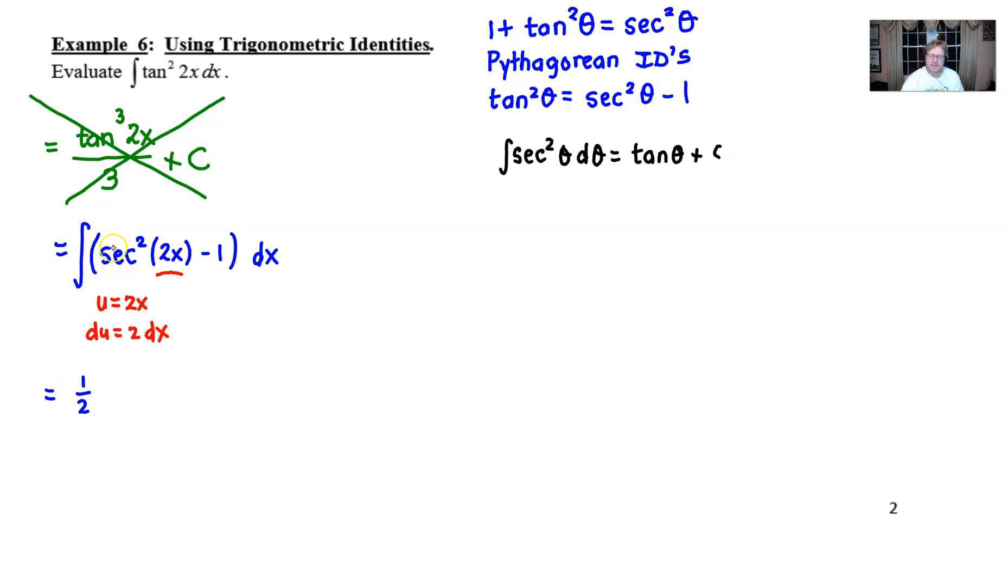So we put that 1 half there. And then when we integrate this secant squared, as I said before, we will get tangent. And then instead of just writing the tangent of u, let's do our back substitution right now just to get it out of the way. And we have the integration of our first term already taken care of. And then we integrate 1 with respect to x. And of course, that will give us just an x. And then don't forget your plus c.